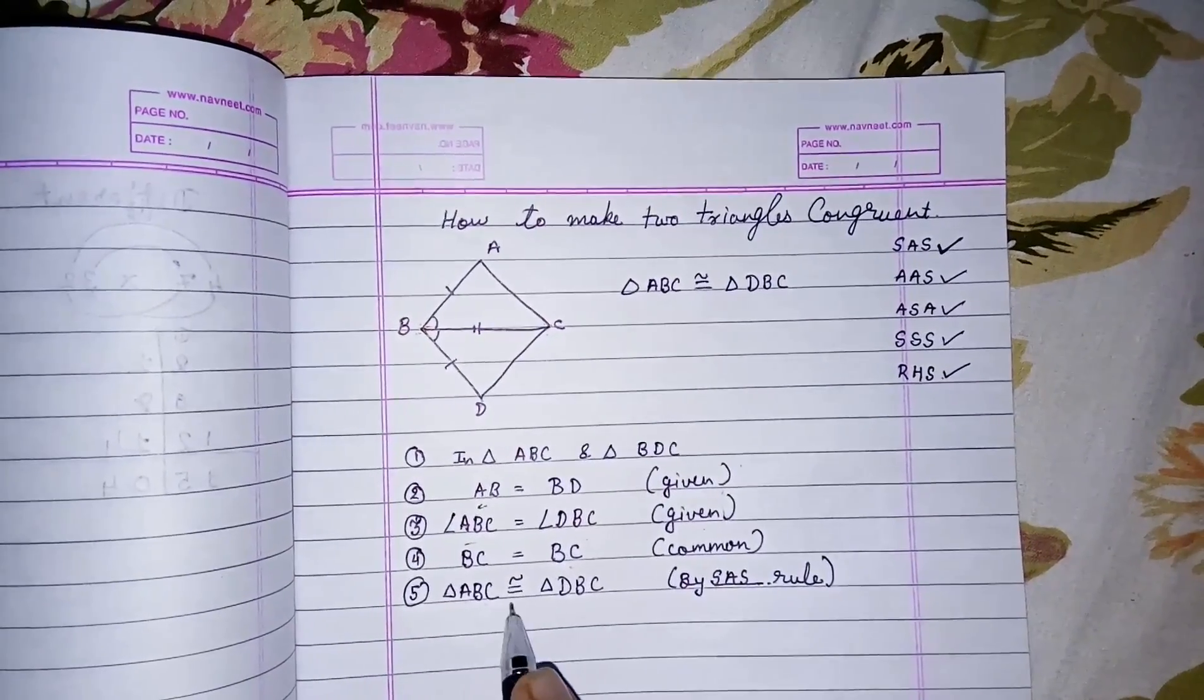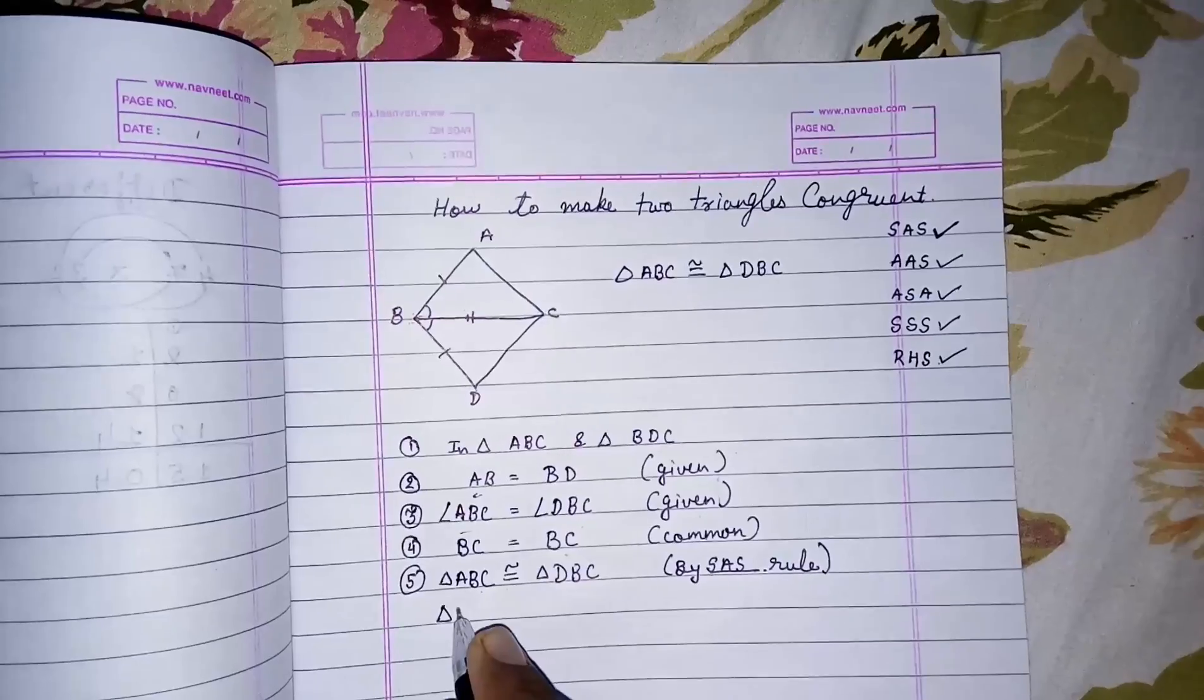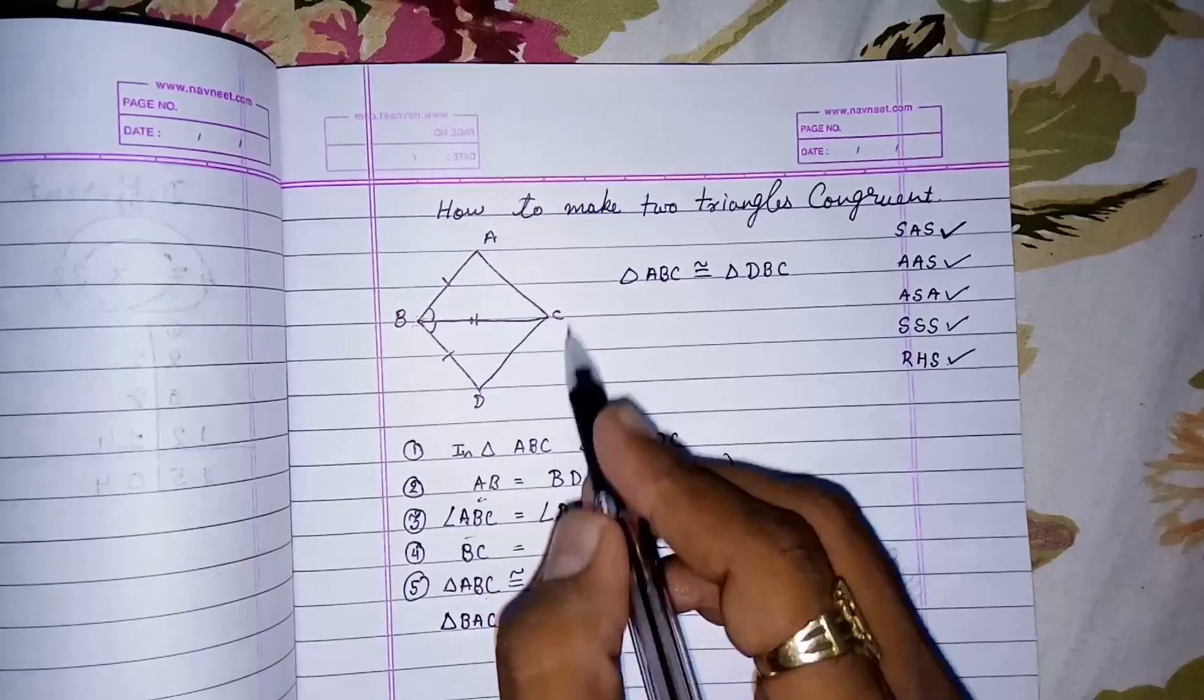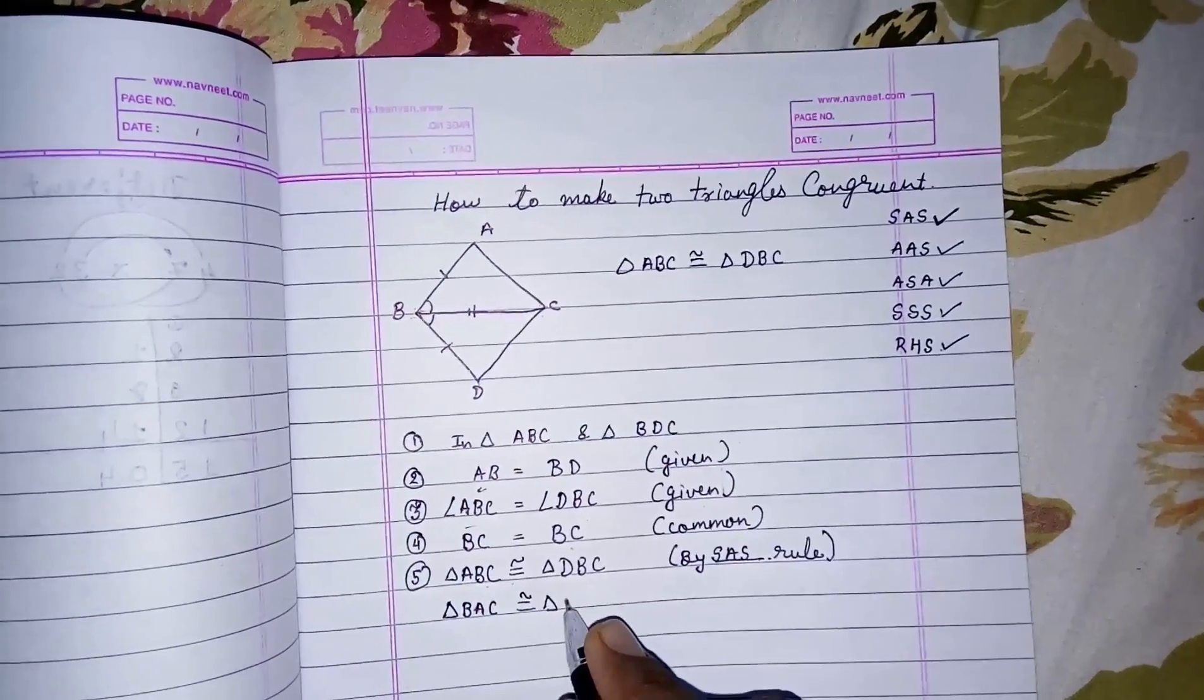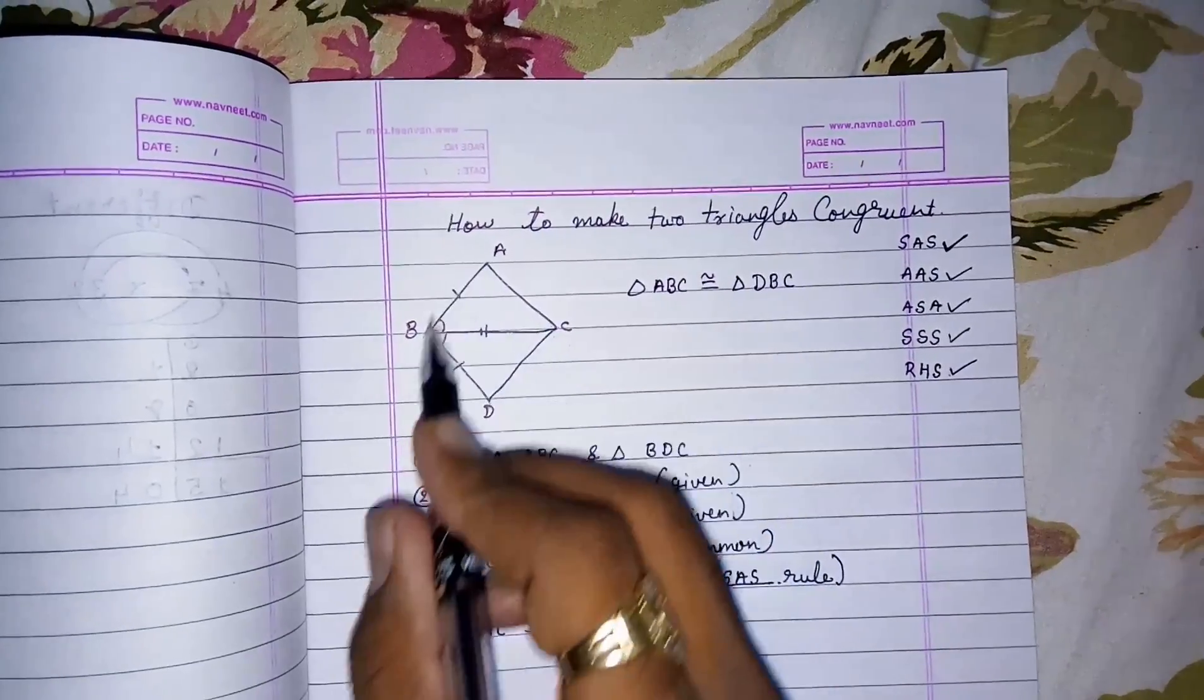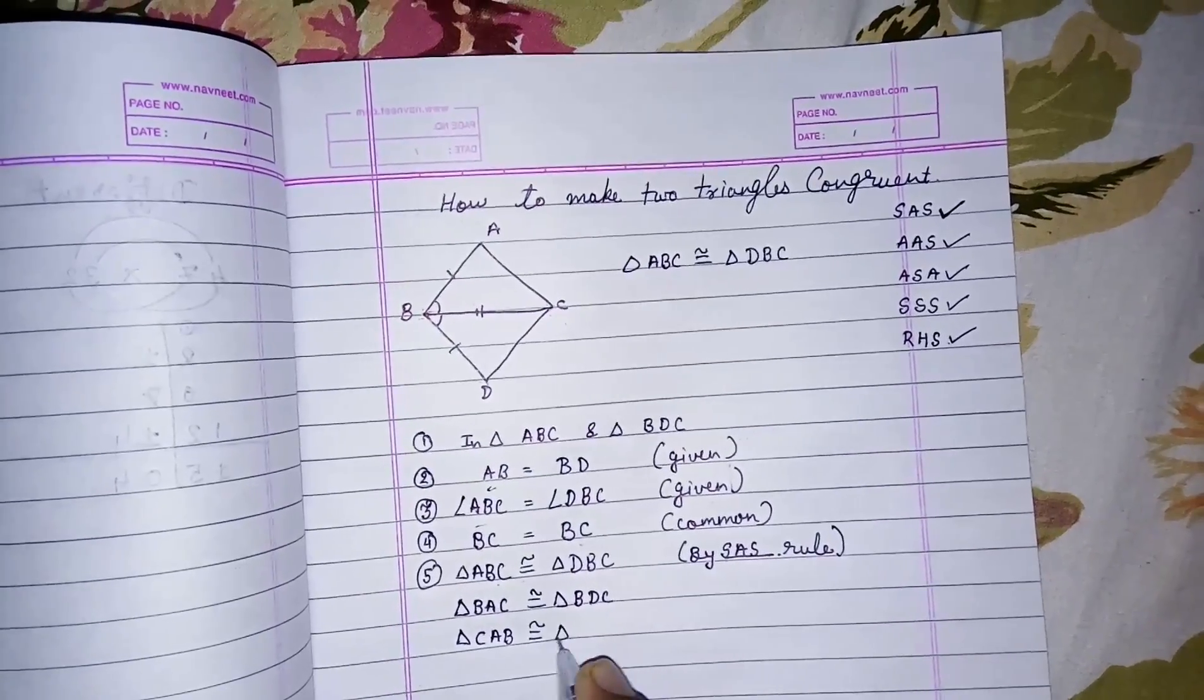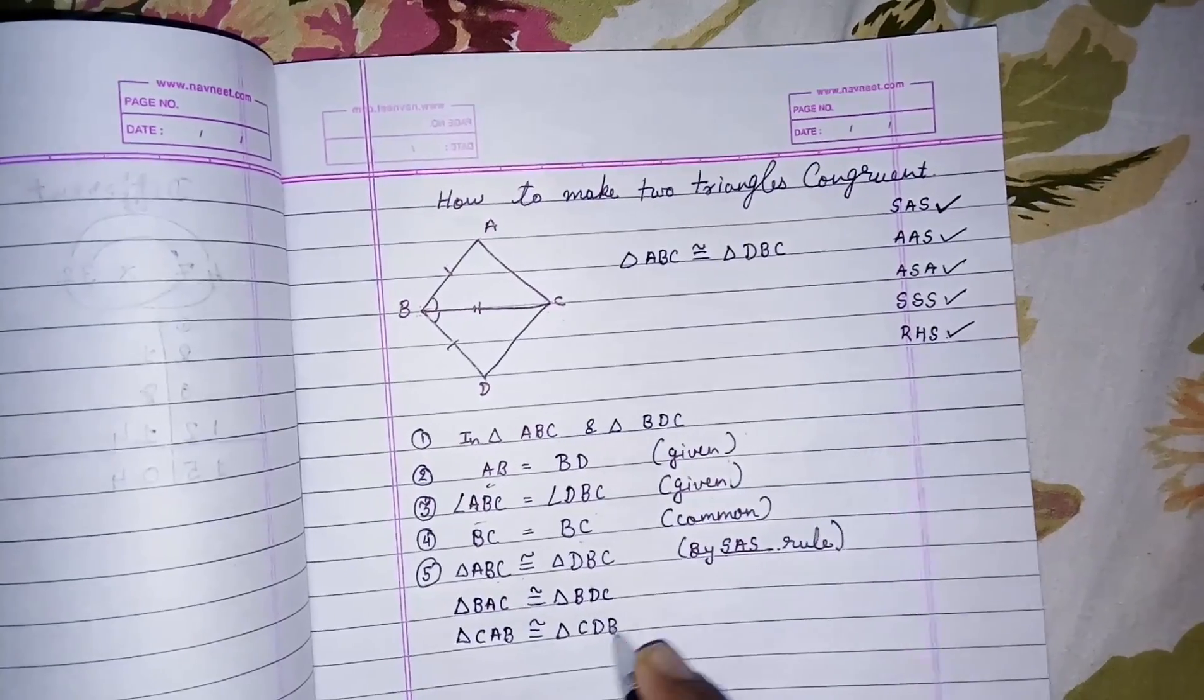If I am writing triangle BAC congruent to, then I have to write triangle BDC. If I am writing CAB, triangle CAB congruent to, then I have to write CDB.